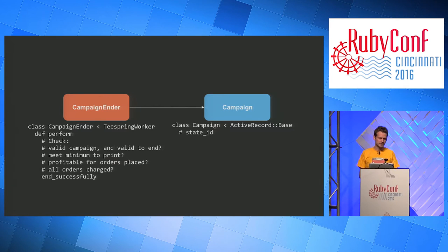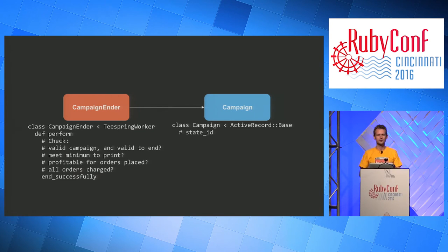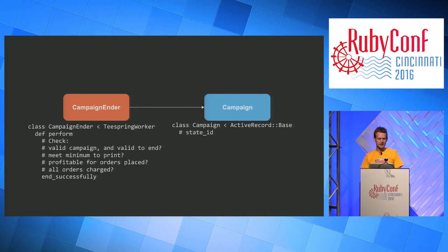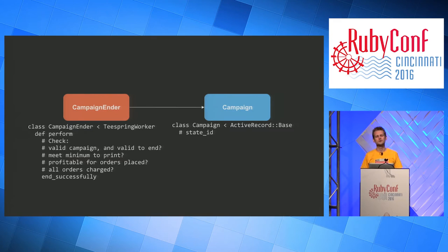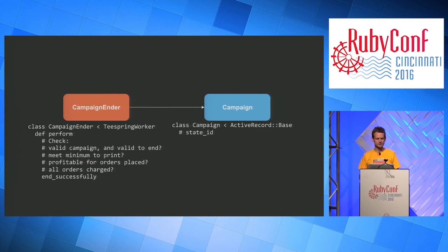Campaign Ender is a worker that runs on Sidekiq. If you read this code, it's one of those great methods where the only way you know how to refactor it is to extract all the procedural code into methods and give each one a name that's like a sentence long describing what it does. What it's doing is checking that the campaign is valid and eligible to end, checking whether it meets the minimum to print — used to be very high for screen printing, now it's down to three for everyone and as low as one for some people — then checking whether it's profitable. By profitable I mean is the creator making a profit. Based on the cost curves and manufacturing method, we calculate whether they're actually going to make money. We don't want to put them in debt, so we only tip it if it's profitable. Then it checks whether all orders have been charged, and if so, it ends successfully.